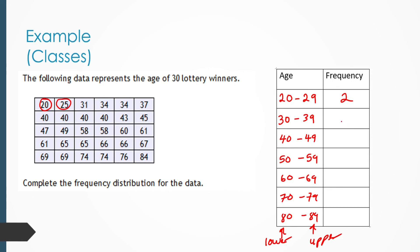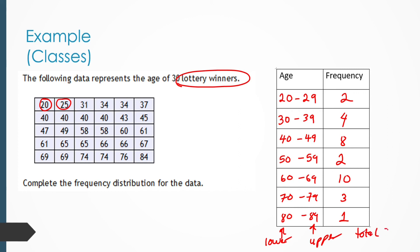Let's go over the solution. We have a frequency of 4 for 30–39, a frequency of 8 for 40–49, a frequency of 2 for 50–59, a frequency of 10 for 60–69, a frequency of 3 for 70–79, and finally a frequency of 1 for 80–89. Now let's check the work — the total should be 30 lottery winners. Adding all frequencies confirms the total is equal to 30.